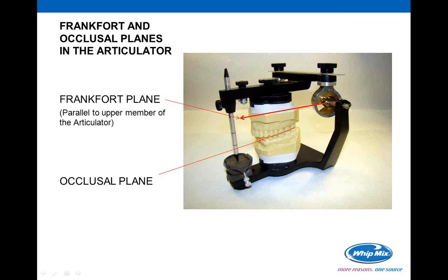Most of us are not working with dentists who use face bow registrations. We deal with registrations that may simply be a quick-bite registration, which doesn't give us information relative to the condyles. That requires what's called arbitrary mounting. A webinar later in the year will cover arbitrary mounting and some tricks that give a better mounting relationship with the articulator, more closely approximating the original patient.